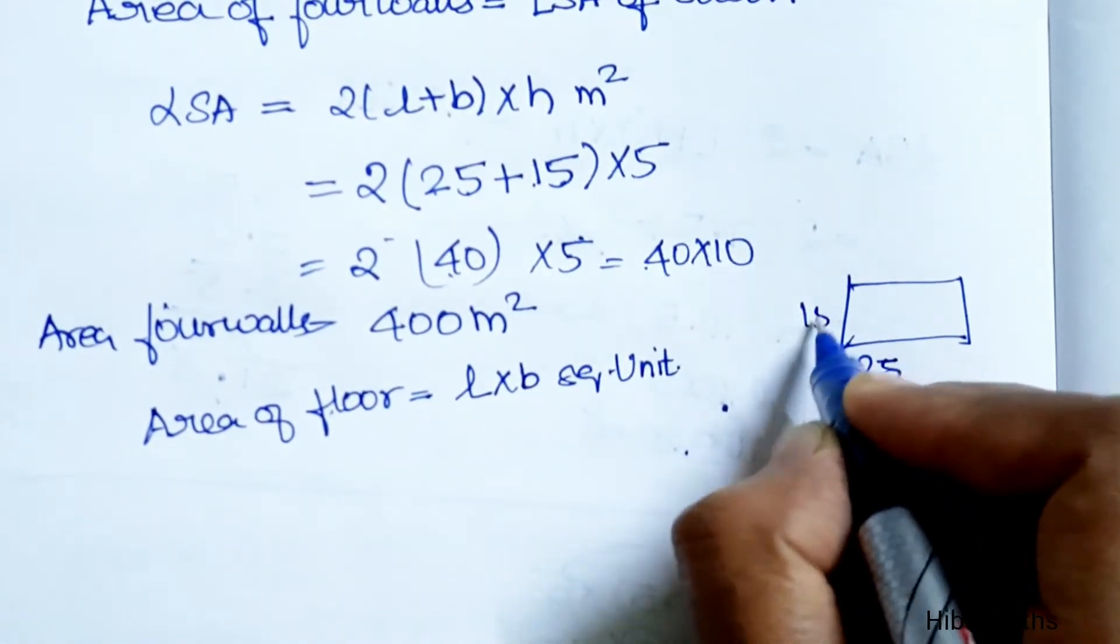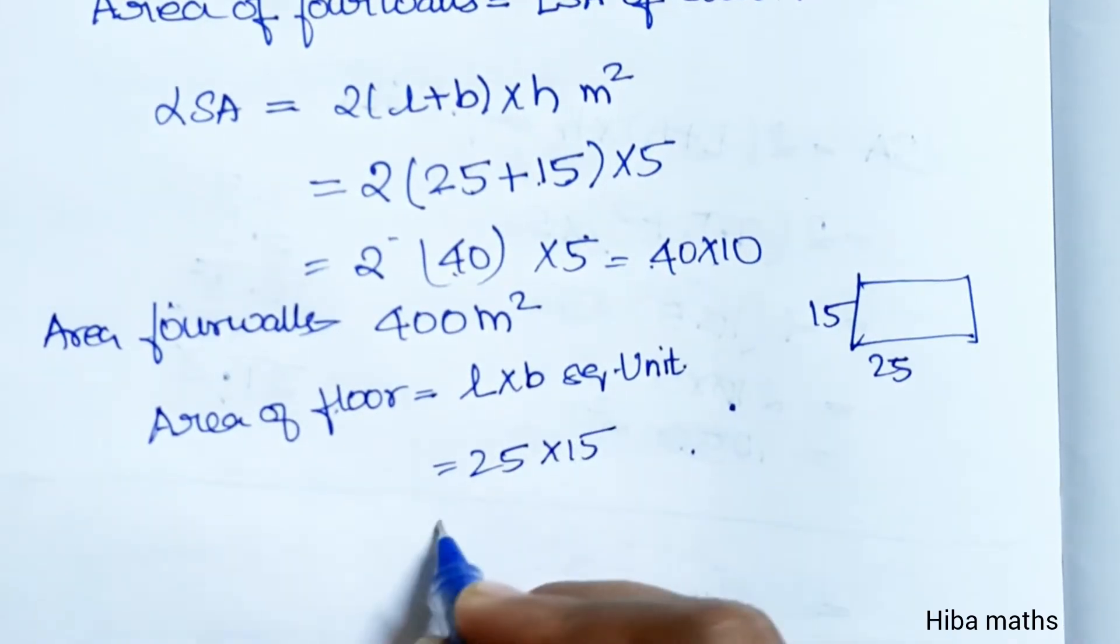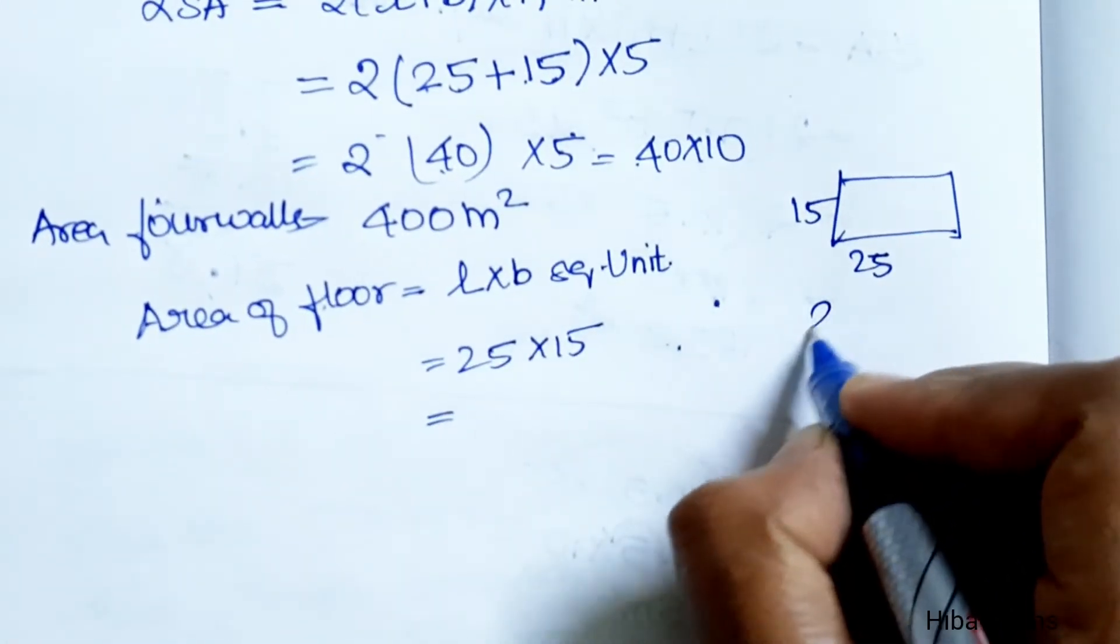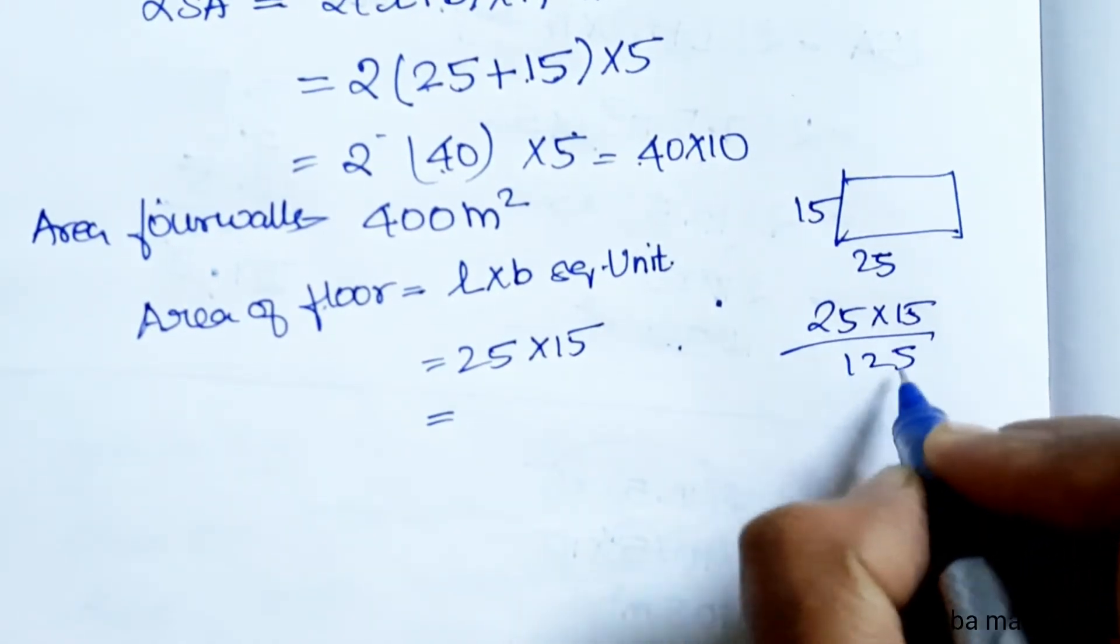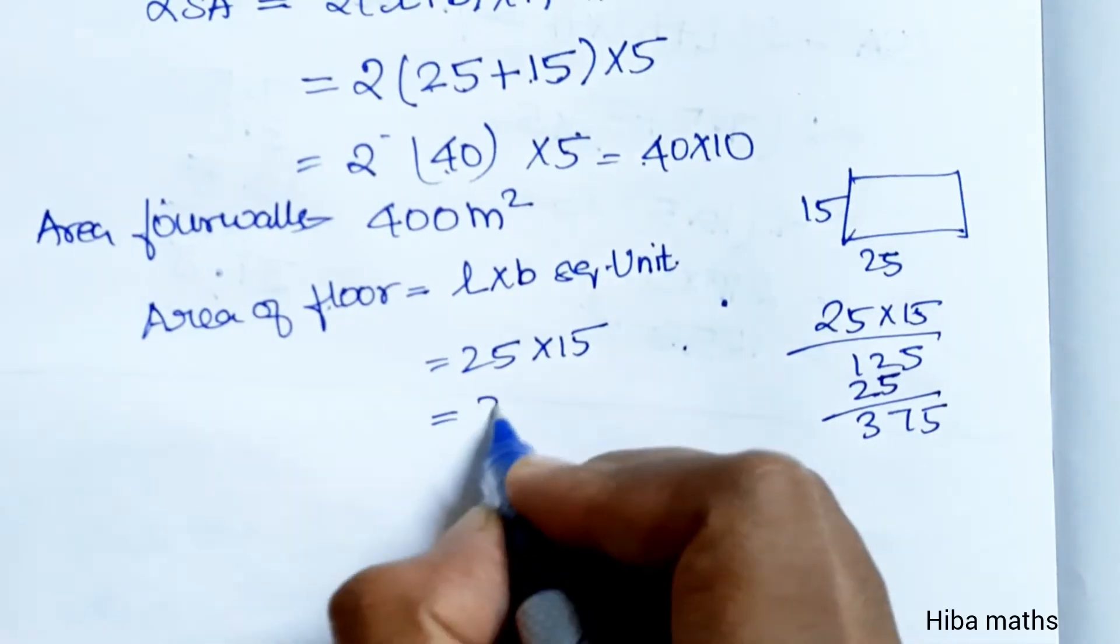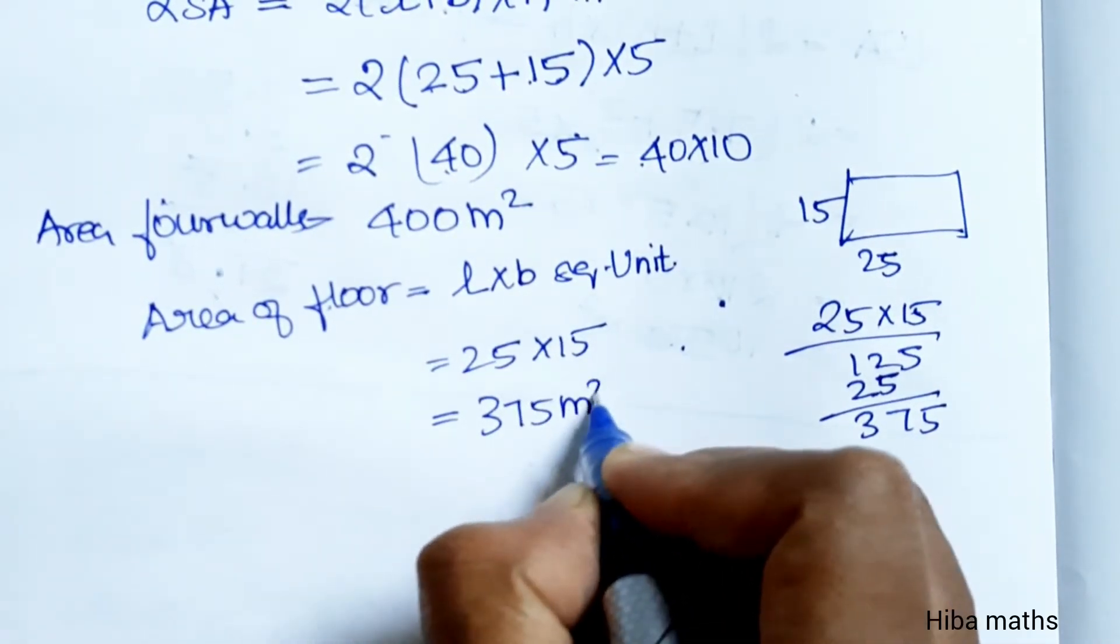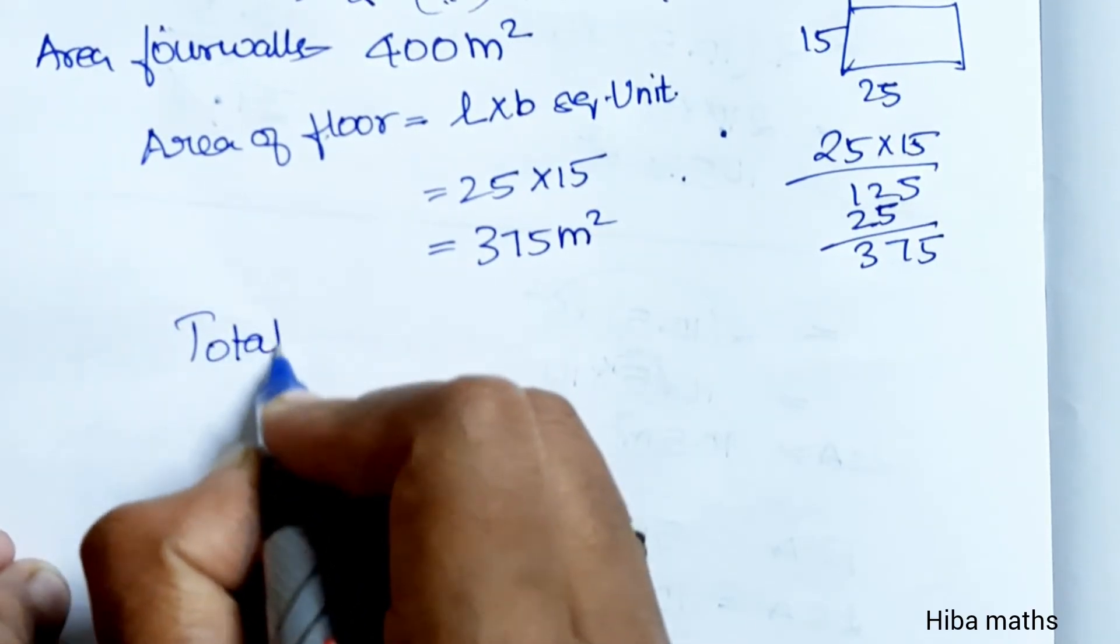Length is 25, breadth is 15, so 25 × 15 = 375 meter square.